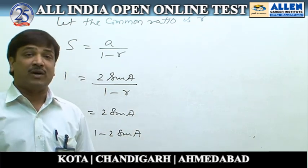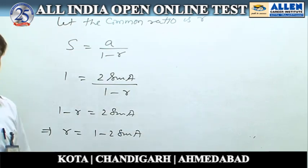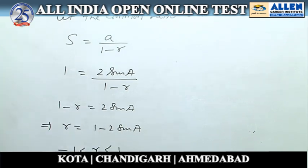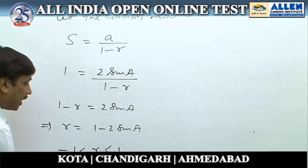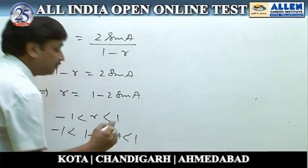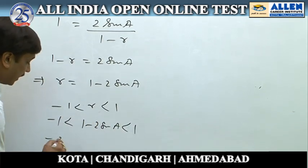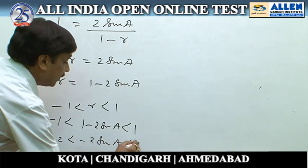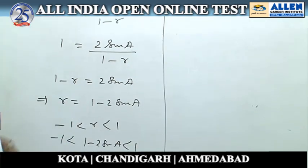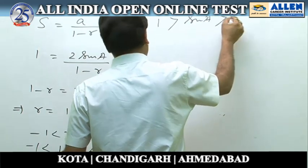For the sum of an infinite GP to exist, the common ratio r must satisfy −1 < r < 1. Substituting r = 1 − 2 sin α into this inequality and simplifying, we get that sin α must lie between 0 and 1, i.e., 0 < sin α < 1.